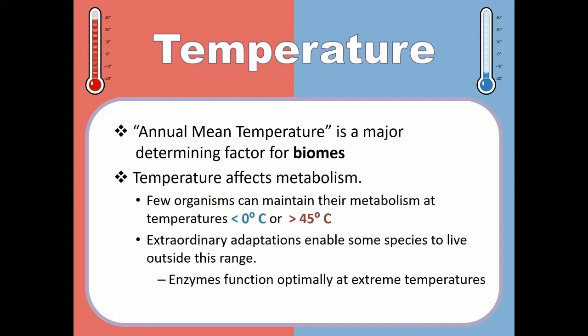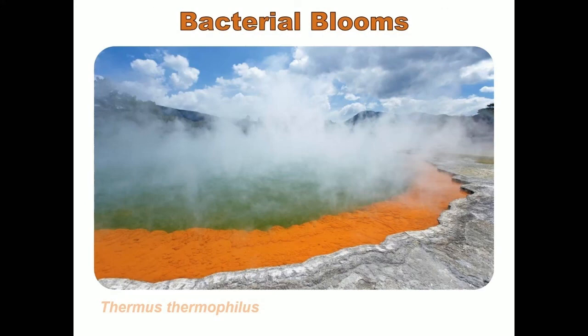Even though the water in Antarctica is well below freezing, we've found thriving colonies of bacteria and some plants able to survive there. Here's an example of an organism able to thrive even in boiling water: Thermus thermophilus, a heat-loving bacteria. It lives in boiling water created by geological activity. That orange crust you see around the lip of this pond is not rock — it is a mat of bacteria absolutely loving this boiling sauna.